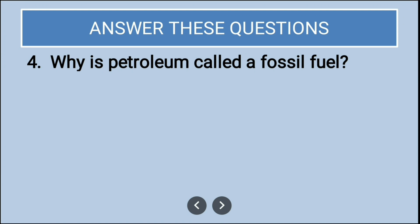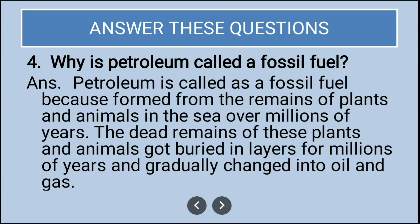Why is petroleum called a fossil fuel? Petroleum is called a fossil fuel because it is found from the remains of plants and animals in the sea. Over millions of years, the dead remains of these plants and animals got buried in layers and gradually changed into oil and gas.